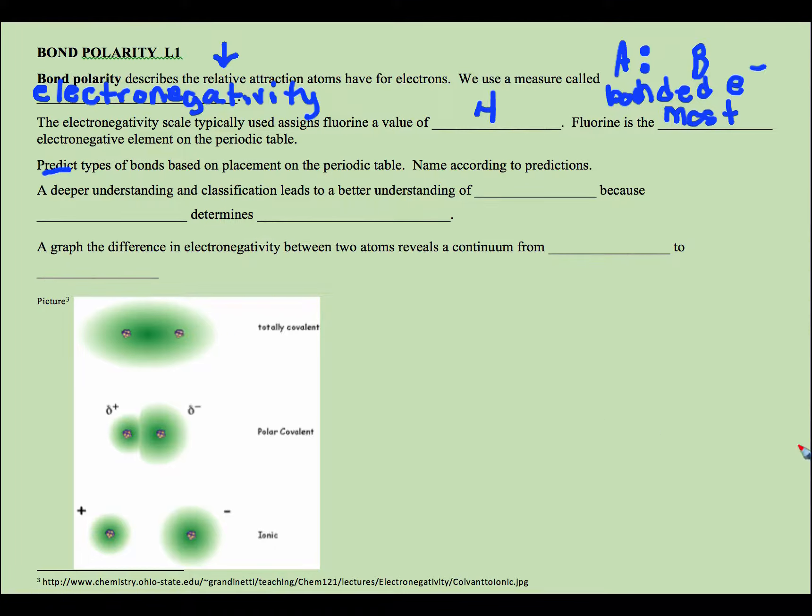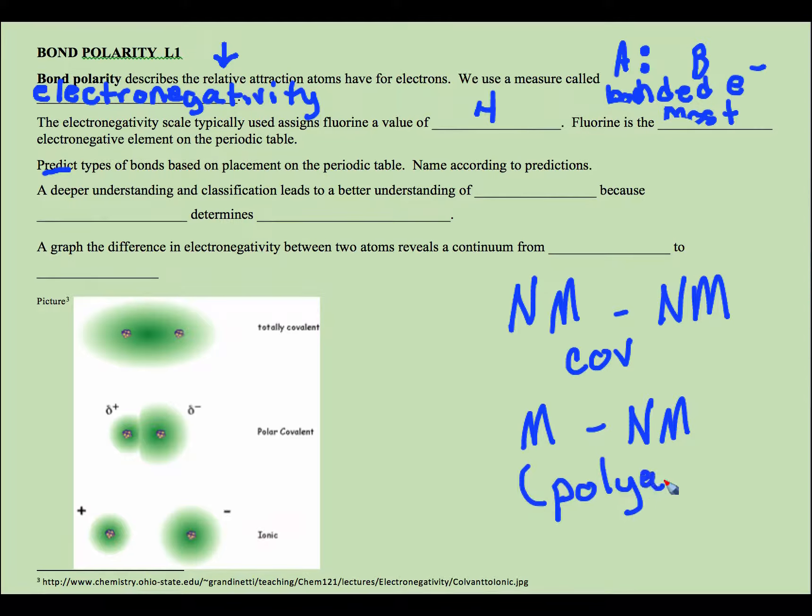Now what you may have done in your class already is predict the type of bonding according to its placement on the periodic table. For example, non-metal to non-metal you would predict to be covalent.